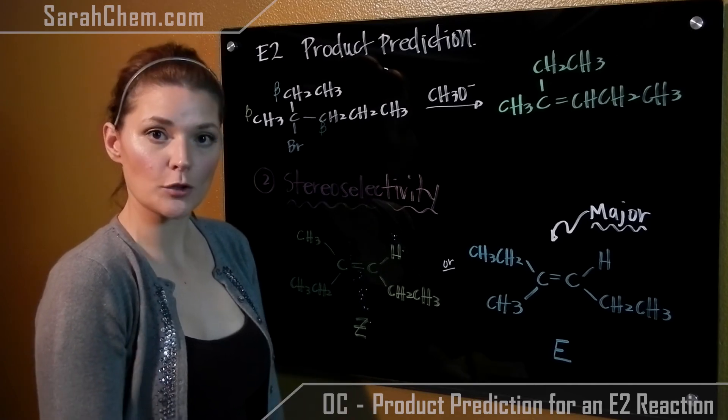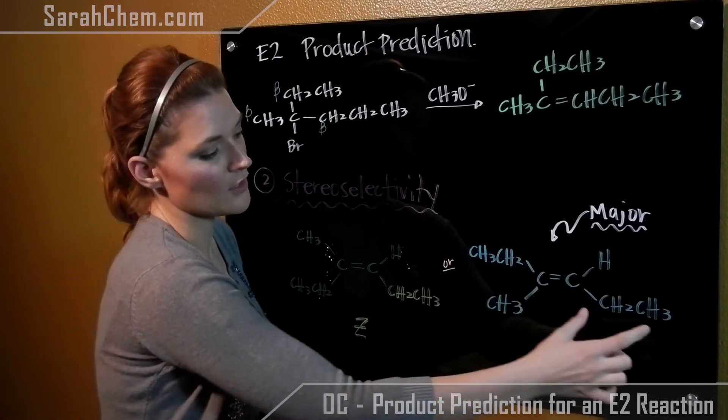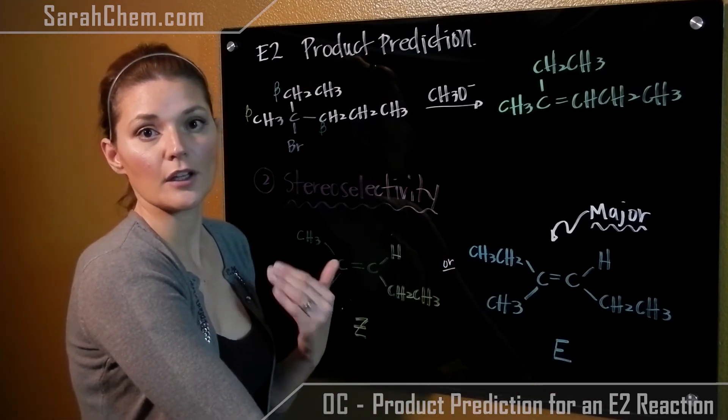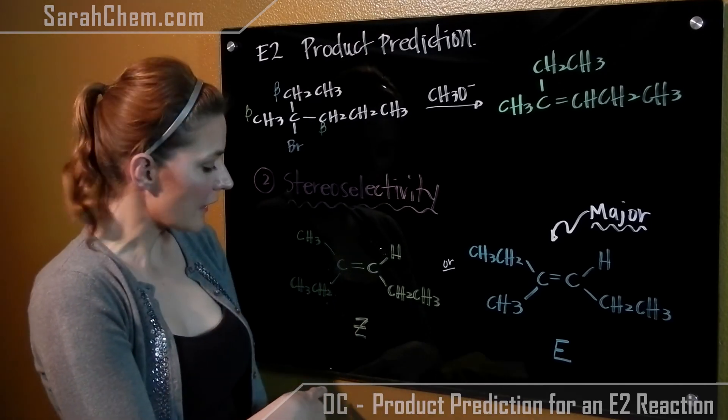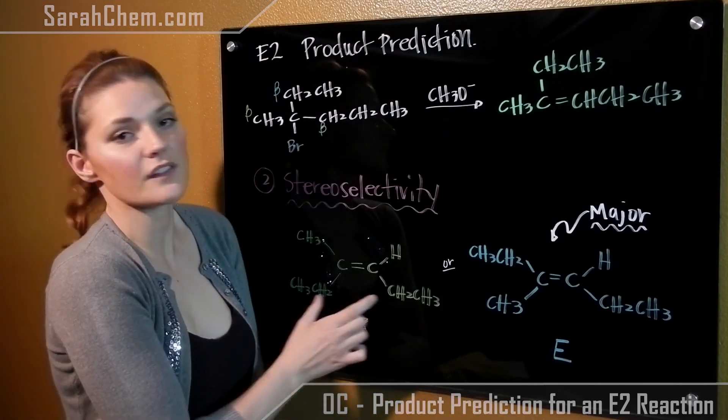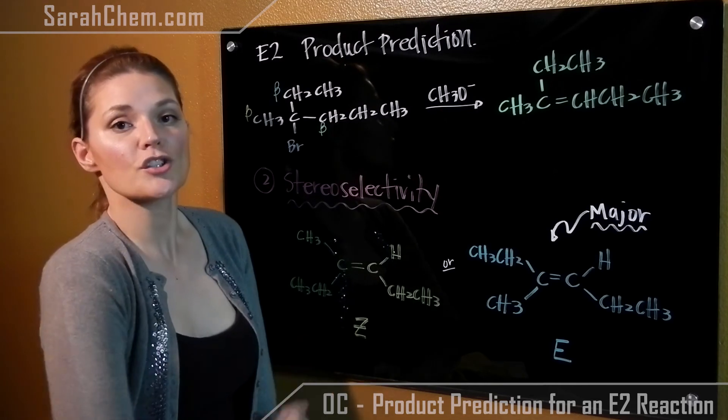However, the E will be the major product because it keeps the bulkiest groups opposite one another, making it more stable than the Z configuration where there would be a lot of steric bumping happening.